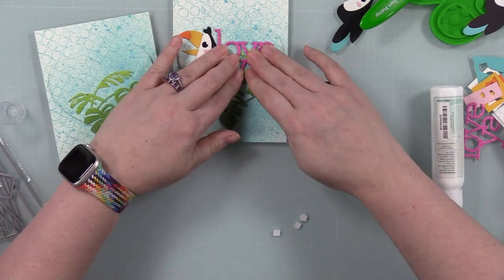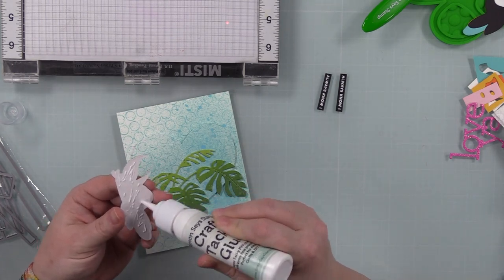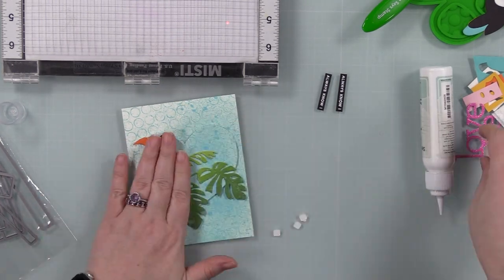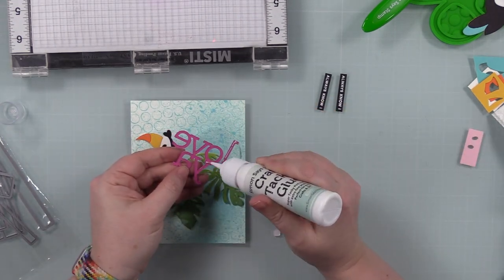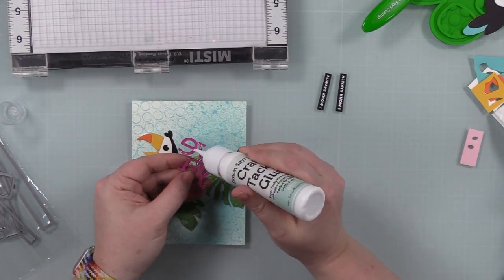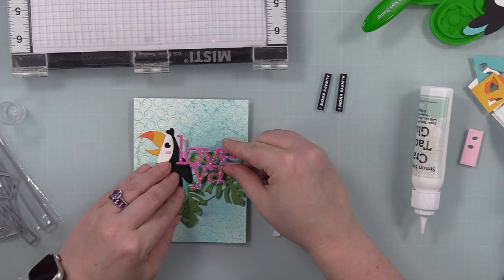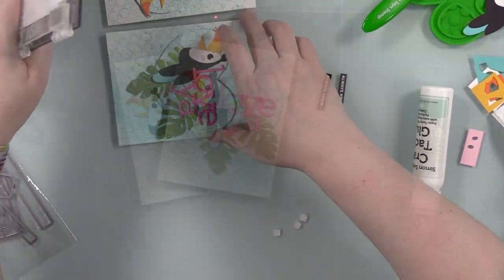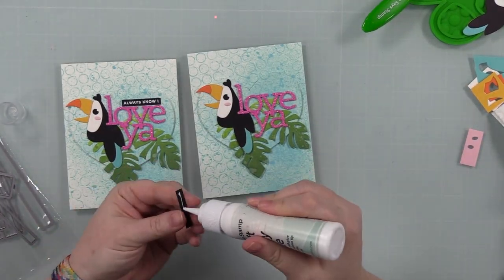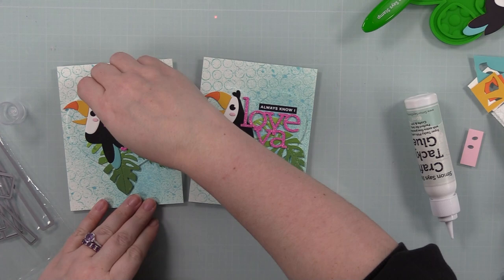I got those adhered, I adhered my little toucan, I adhered the Love Ya sentiment. Once I've got all those in place, I just set it under my Misti so that it does the work of holding everything down. Once I have those adhered into place, I can then adhere the little companion sentiments that I had white heat embossed. So the front will say 'always know I love ya' and on the inside it says 'thanks for everything.' Definitely not Valentine's Day, but Valentine's adjacent.